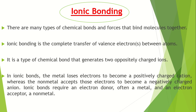When an atom loses its electron it bears the positive charge, and the atom that accepts the electron bears the negative charge. So they are oppositely charged ions, and the bond between the oppositely charged ions is the ionic bond.